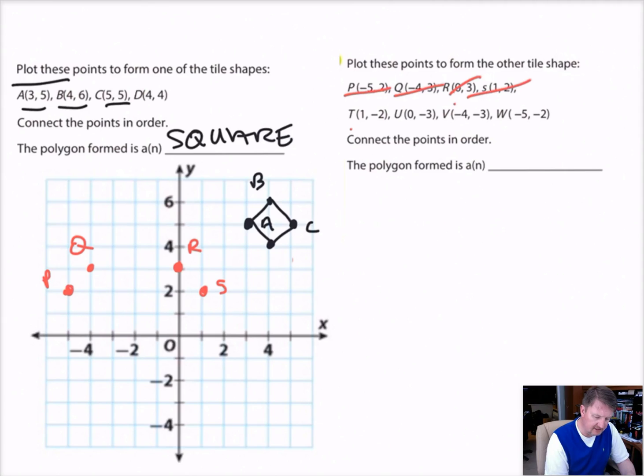Then T is 1, negative 2. So 1, and then negative 2 would be T. U is 0, negative 3, 0, negative 3 is U. V is negative 4, negative 3. Negative 4, negative 3 is right there. That's point V. And then finally we have point W, which is negative 5, negative 2. So negative 5, negative 2 is point W.